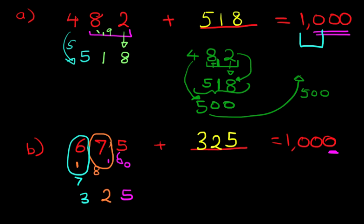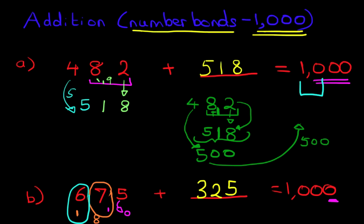Write down a three digit number and try to work out how you can get that number to equal 1000. What do you need to add to it? You can use either of these two methods. With a bit of practice, you'll understand this. And that is number bonds to 1000.